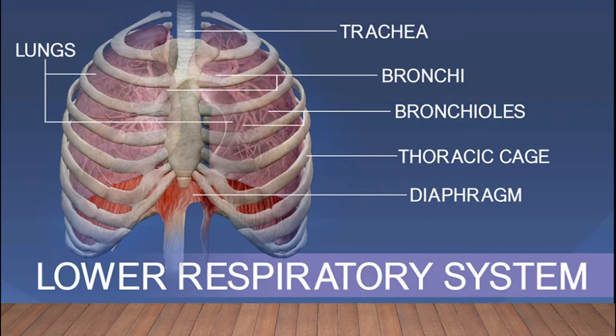The trachea consists of dense regular connective tissue and smooth muscles reinforced with 15 to 20 C-shaped cartilage rings. As you can see in the diagram, these C-shaped rings prevent collapse of the trachea. It is also lined with mucous membrane.